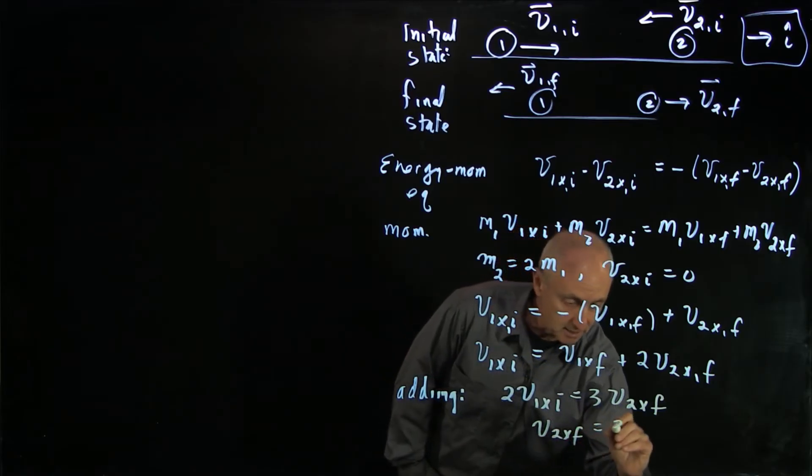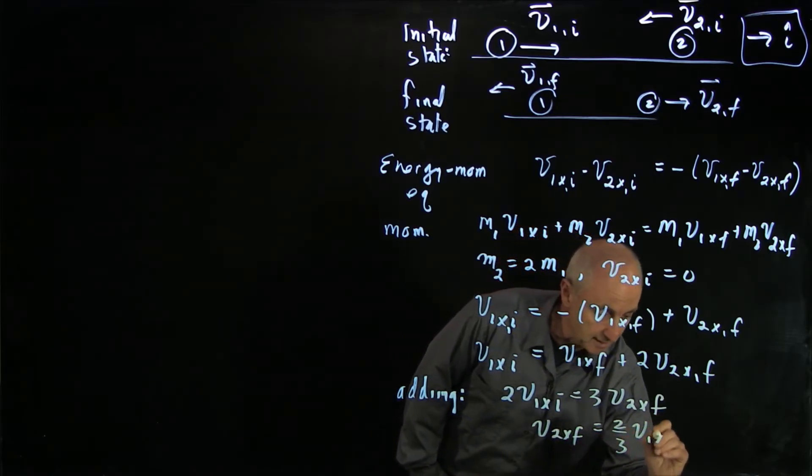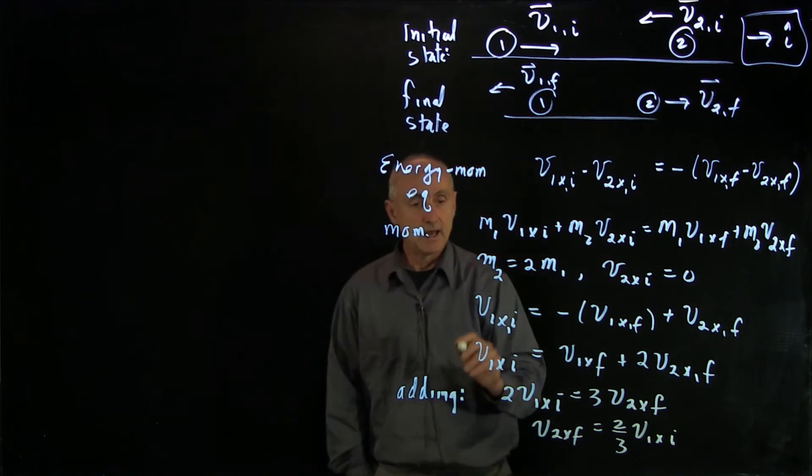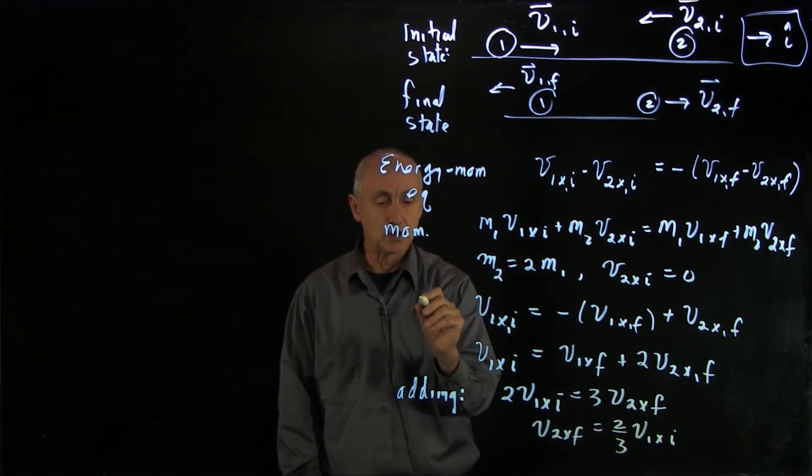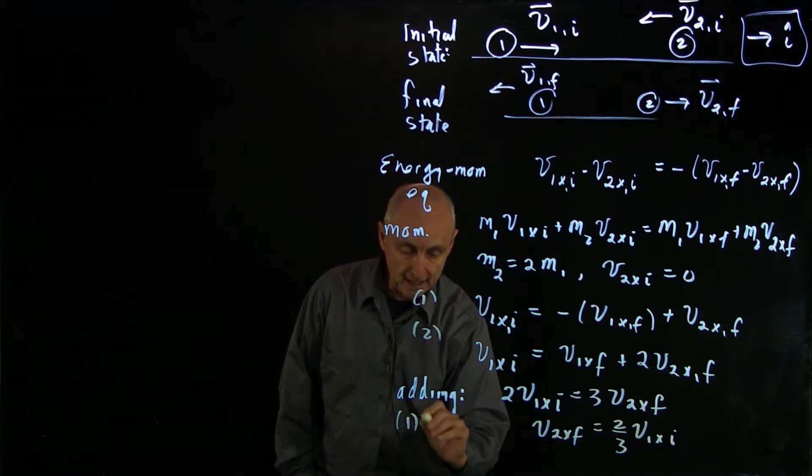Or v2 x final is 2 thirds v1 x initial. And let's just call this equation 1 and 2. So we added.